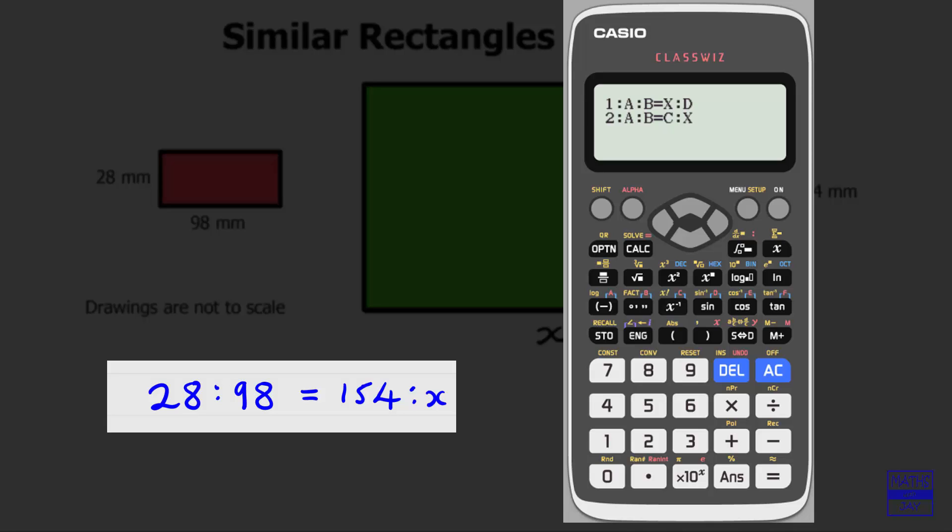Now we're comparing what we've written with what's on the screen, and our x is at the very end, so we want to select 2. Then all we need to do is key in our 28 and equals, 98 and equals, and then 154 equals.